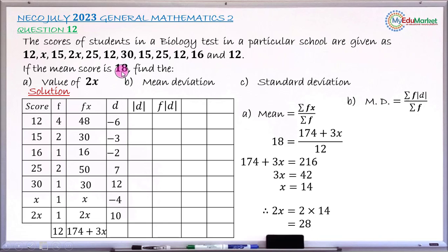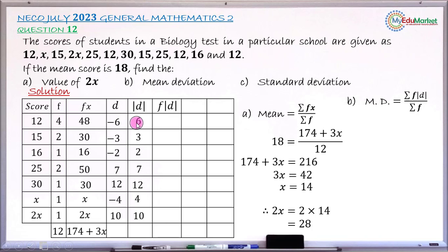Taking the absolute value of each deviation — disregarding the negative signs — gives |D| values of 6, 3, 2, 7, 12, 4, and 10. Now multiplying each |D| by its corresponding frequency: 6×4 = 24, 3×2 = 6, 2×1 = 2, 7×2 = 14, 12×1 = 12, 4×1 = 4, and 10×1 = 10.